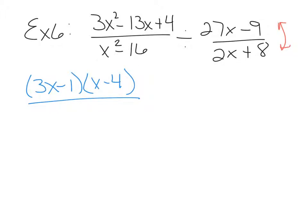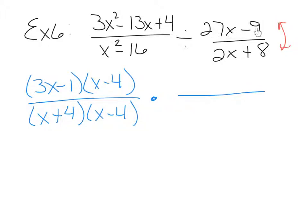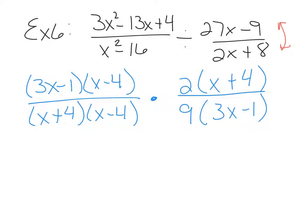Those factors turn out to be 3x minus 1 times x minus 4. The denominator is the difference of squares, so that's x plus 4, x minus 4. Division changes to multiplication, and the factors flip. The numerator 27x minus 9 has a GCF of 9, leaving 3x minus 1, and 2x plus 8 has a GCF of 2, leaving x plus 4. It saves writing to factor and flip at the same time.